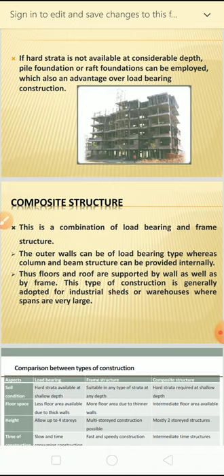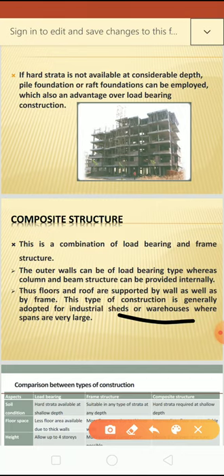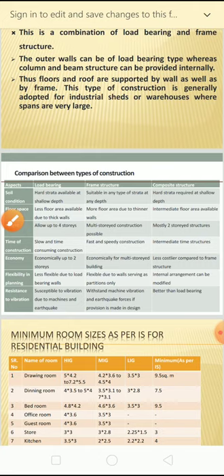The third type is composite structure, which is a combination of both load bearing and frame structure. The outer walls can be load bearing type, while columns and beams are provided internally as frame structure. Floors and roofs are supported by both walls and frame. This is called composite structure. This type of construction is normally used in sheds and warehouses. A comparison chart with aspects like soil condition, floor space, height, and time of construction was already discussed yesterday.